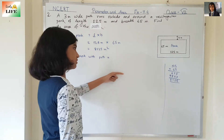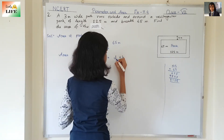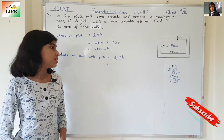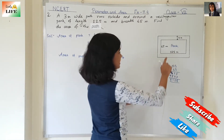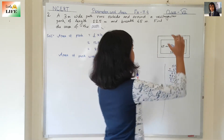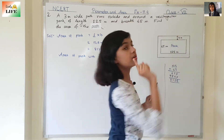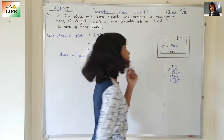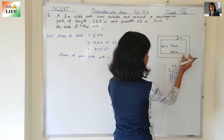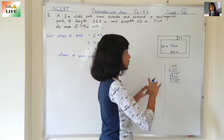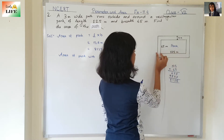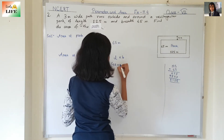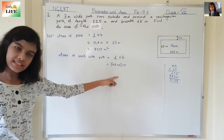Area of park with path. This is also a rectangle, so L into B again. We don't know the length of the bigger rectangle. The length of the smaller rectangle is 125 meters, and the path is 3 meters wide on each side — so 3 meters here and 3 meters on the other side. If we add 125 plus 3 plus 3, we get the length of the bigger rectangle: 125 plus 6 equals 131 meters.